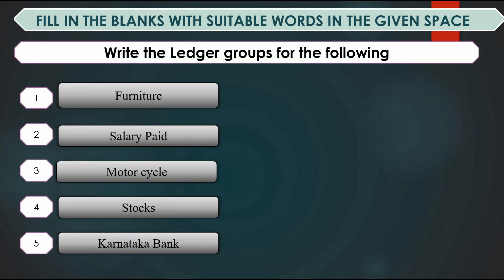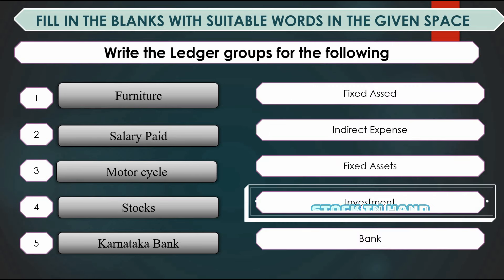Write the ledger groups for the following: Furniture — Fixed Asset; Salary Paid — Indirect Expenses; Motorcycle — Fixed Asset; Stock — Stock in Hand; Karnataka Bank — Bank Account.